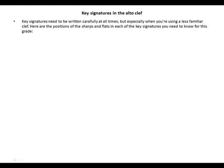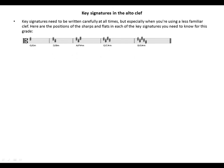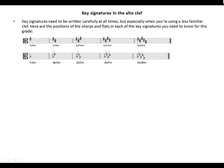Key signatures need to be written carefully at all times, but especially when you are using a less familiar clef. Here are the positions of the sharps and flats in each of the key signatures you need to know for this grade in the alto clef. For sharps: G or A minor, D or B minor, A or F sharp minor, E or C sharp minor, B or G sharp minor — so those are the one through five sharp key signatures. For flats: F or D minor, B flat or G minor, E flat or C minor, A flat or F minor.